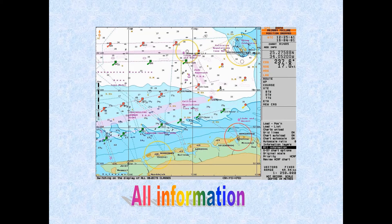Now let's compare the display base with all other information. In all other information you can see there is a lot of information displayed. There is nothing wrong with that — in a narrow channel area sometimes you need all the information. However, you can also see that it becomes a bit cluttered. If it becomes cluttered then you might miss out on essential information, and there may be too many alarms ringing which will distract you from your main duties of monitoring the passage.